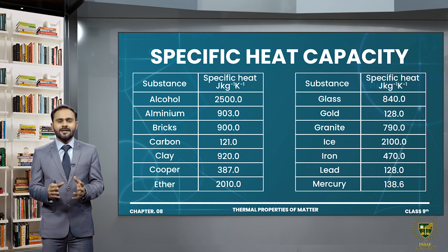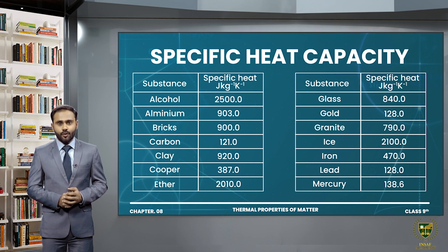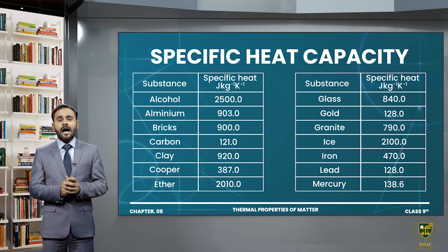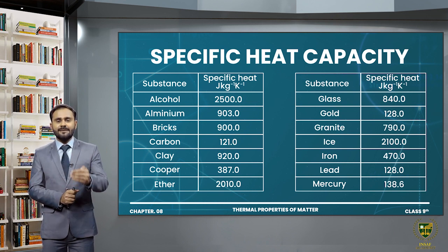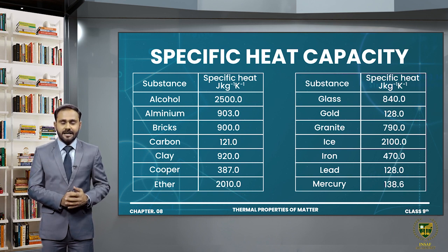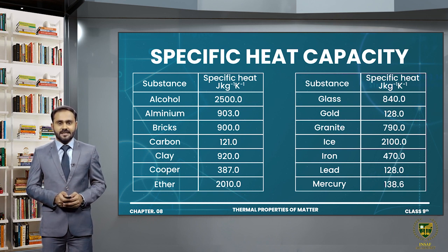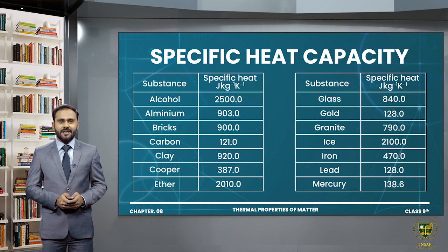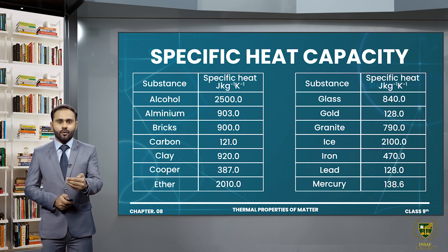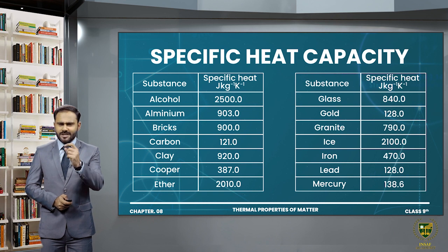Toh ye problem kis tarah se aasaan ho gayi — just to know the value of specific heat capacity. Ke agar aapko specific heat capacity maloom ho, kisi bhi quantity ki, kisi bhi matter ki, toh aap easily ye bata sakte hain ke agar wo quantity large amount mein bhi maujood hai, toh uska 1 Kelvin temperature rise karne ke liye kitni heat required hogi. So we can define it as: specific heat of a substance is the amount of heat required to raise the temperature of 1 kilogram mass of that substance through 1 Kelvin.